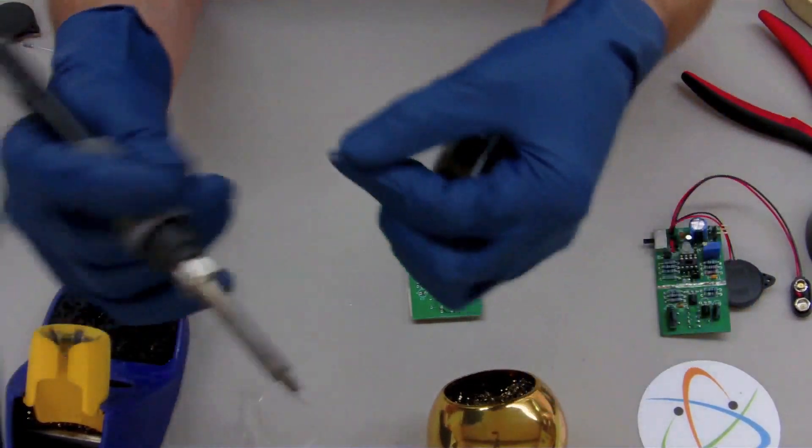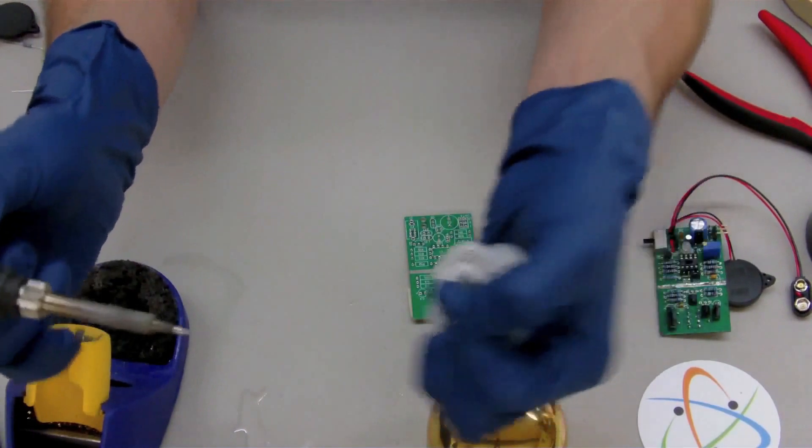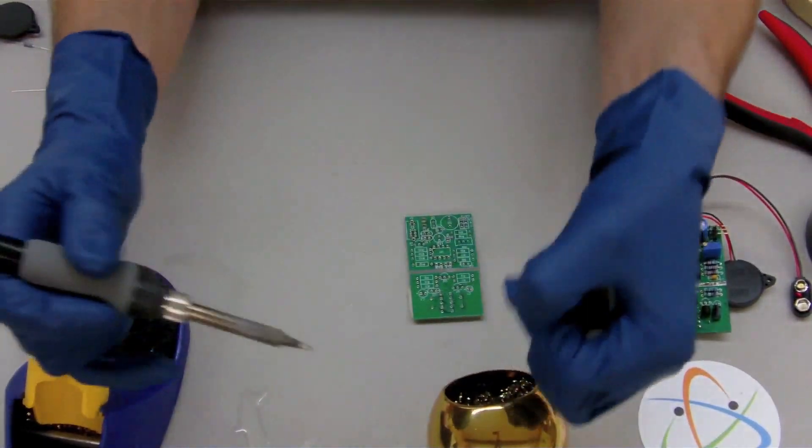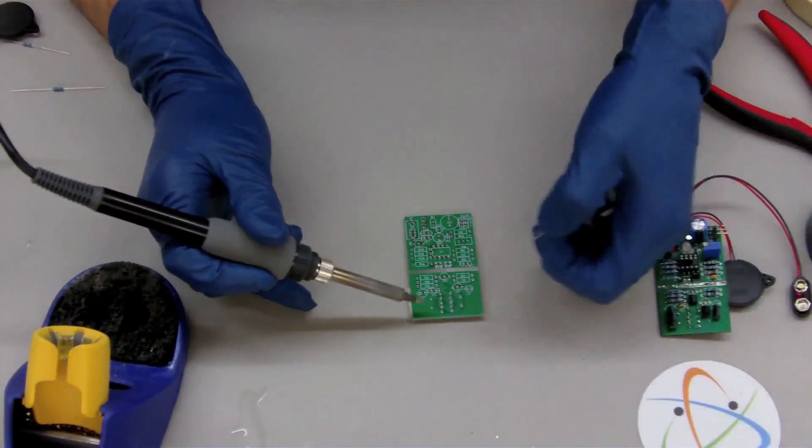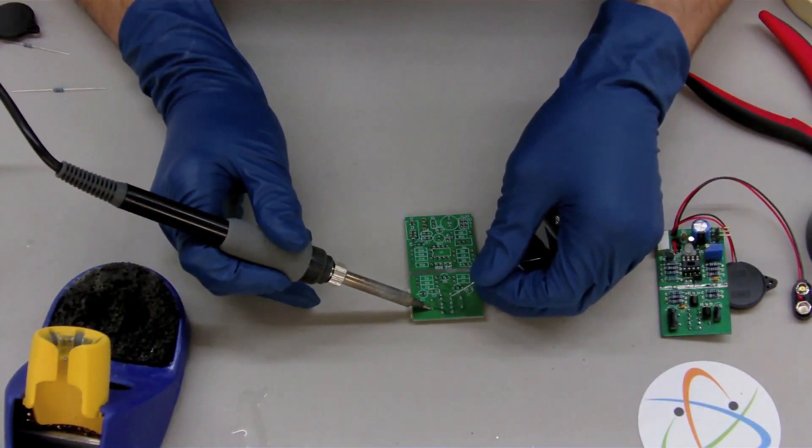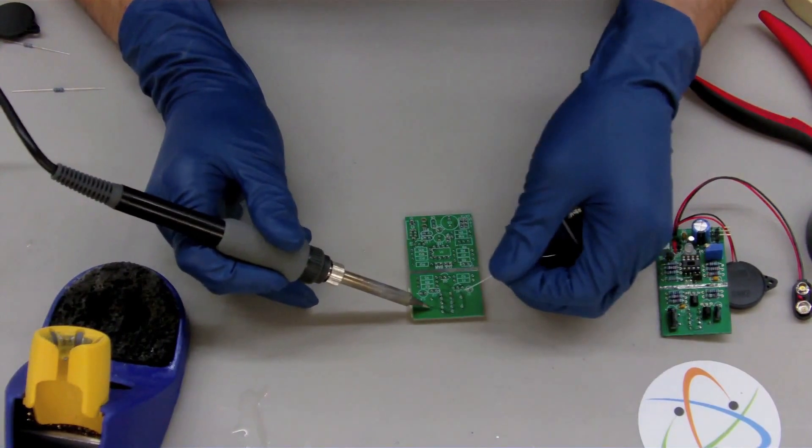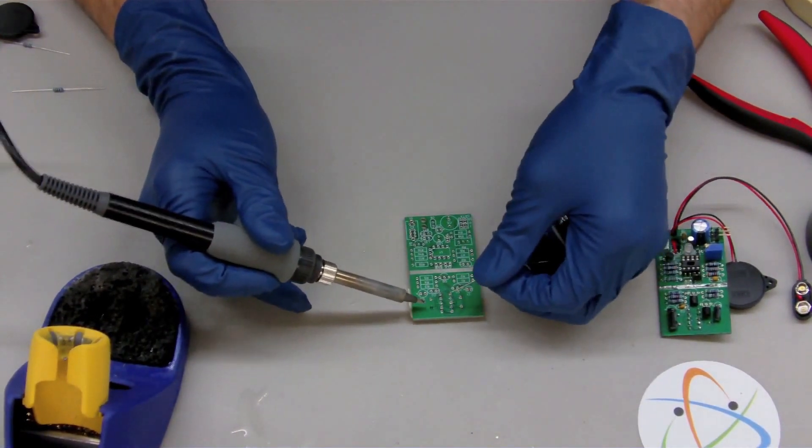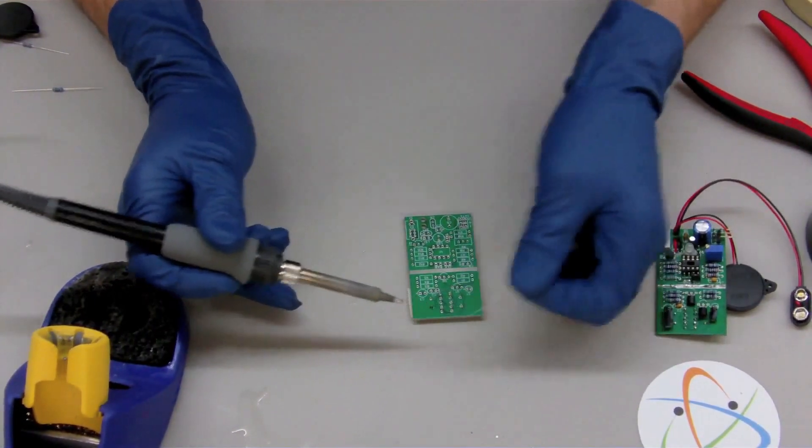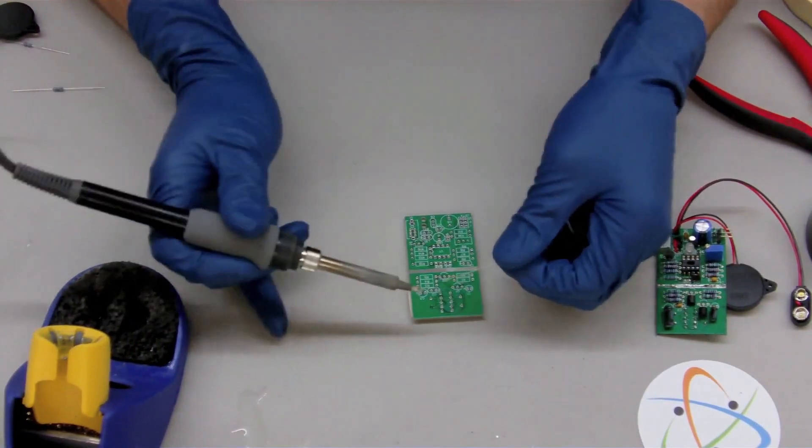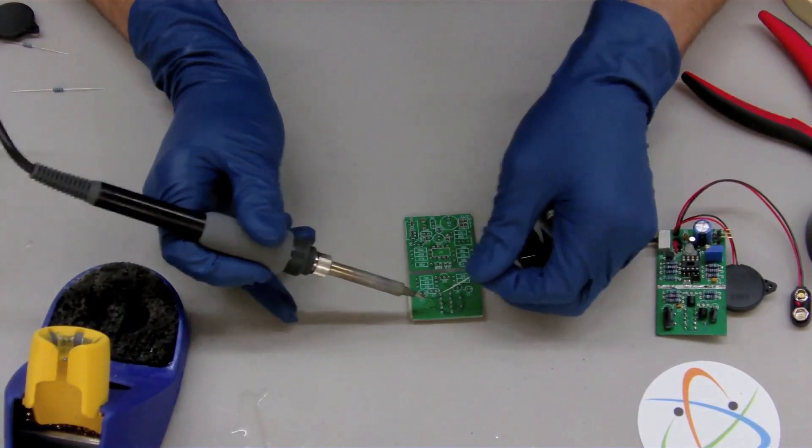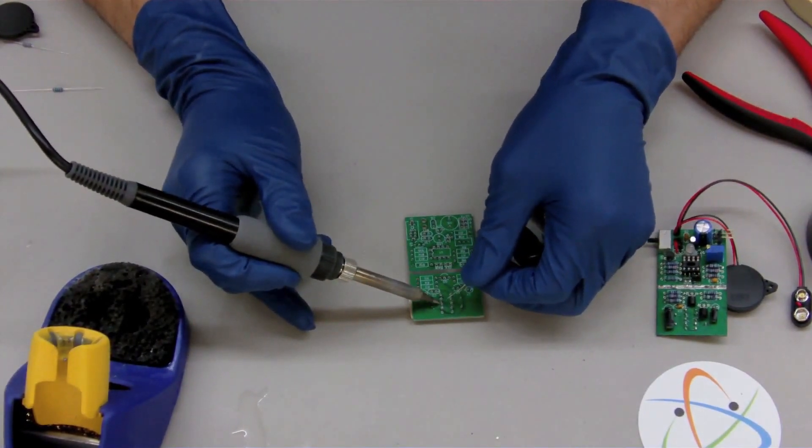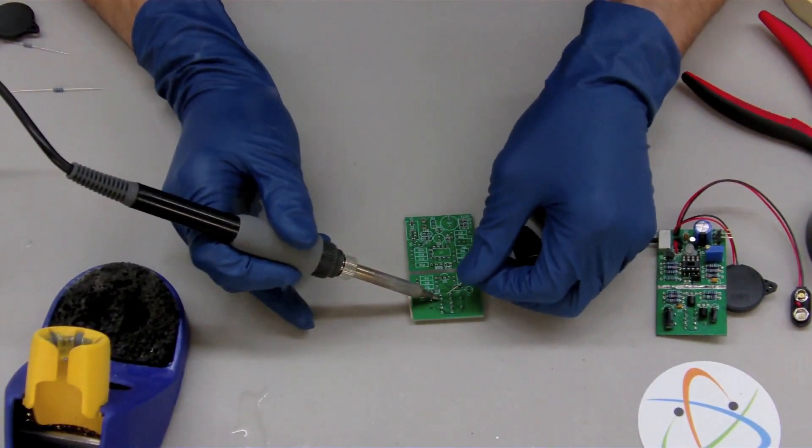So what I do is I spool out a couple inches, and you want to make sure to heat up the pad. And when the solder hits the pan, it should flow all the way around the pad, and that's important. It needs to go all the way around. If it does not go all the way around, go ahead and hit it again and it will.